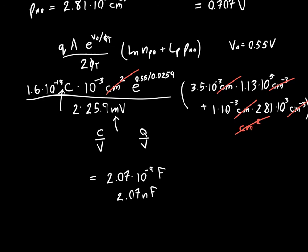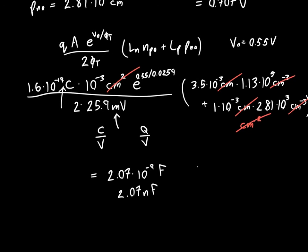Now, what if we had a different bias voltage? So what if we had V0 equal to say 0.61 volts? What would the answer look like then? Well, it turns out in that case, the answer would be 20.9 nanofarads. So if we increase the bias voltage just by a little bit, from 0.55 volts to 0.61 volts, the diffusion capacitance increases by just about a factor of 10. So this is a hugely voltage dependent capacitance.